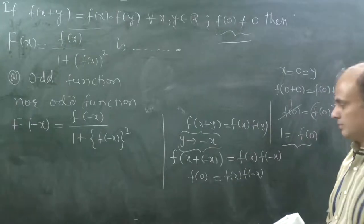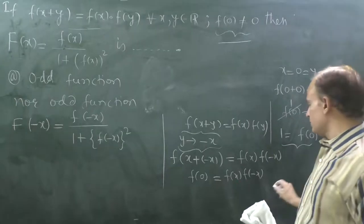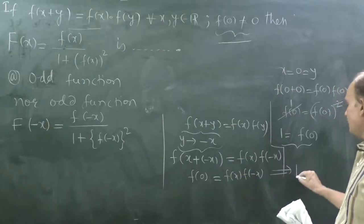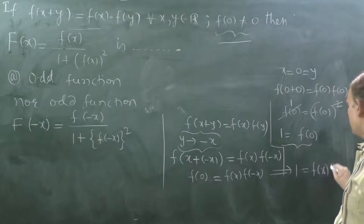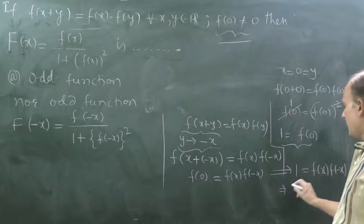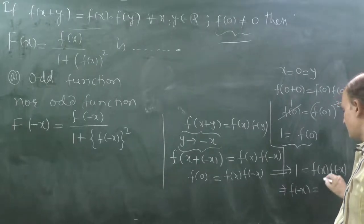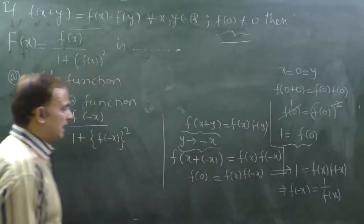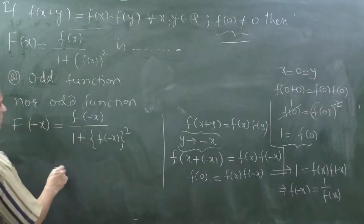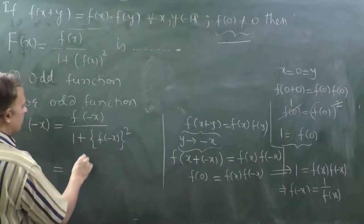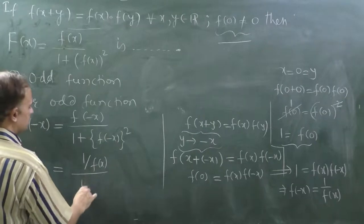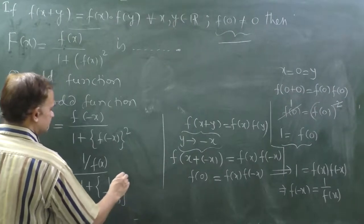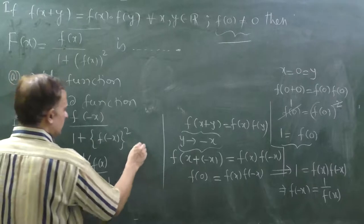Now substituting f(0) = 1 back into our earlier result: 1 = f(x)·f(-x), which gives us f(-x) = 1/f(x). We can now substitute this into the expression for F(-x). Replacing f(-x) with 1/f(x), we get F(-x) expressed in terms of 1/f(x) and 1/f(x) whole squared.